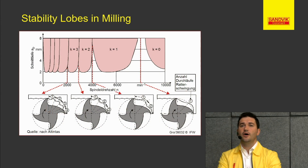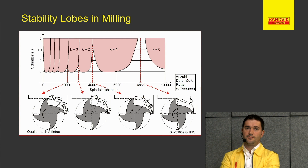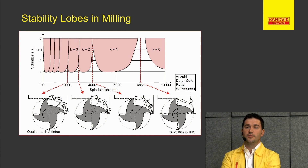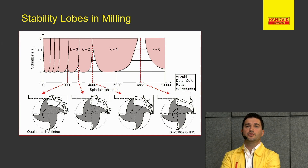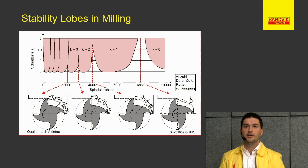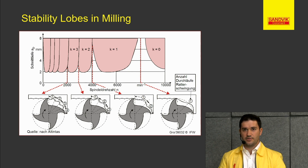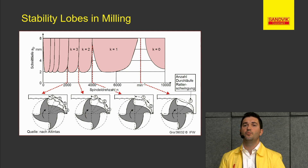Now let's see how spindle speed can help us with vibration. We have here what we call a stability lobe — a spindle stability lobe — and we can calculate that with the Piazza sensor. We try to find the natural state of vibration of our tool, and once we know that, we try to align and match the natural state of frequency with the tool passing frequency. When you align them one to one, this is your best case and you'll get the best results and the best surface finish.